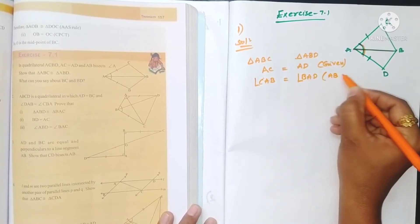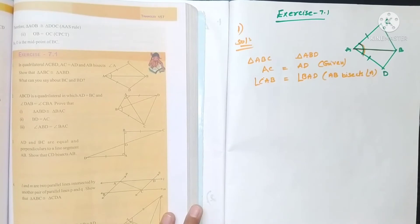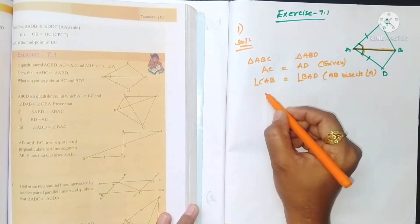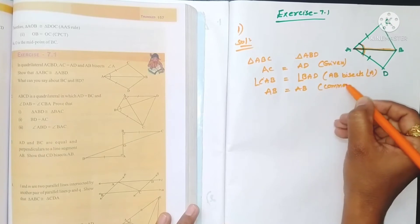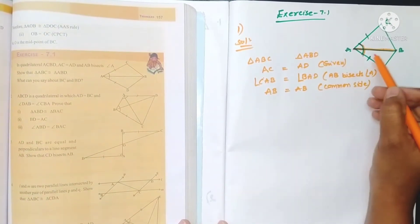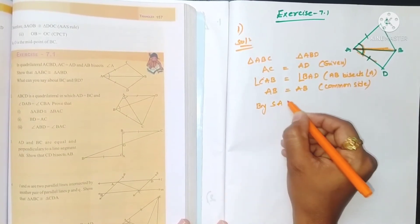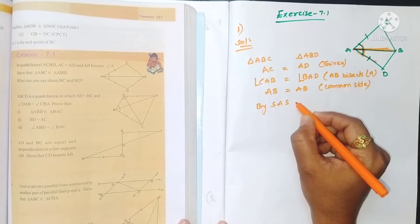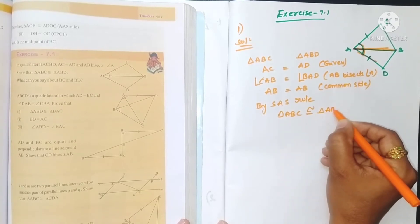The reason is AB bisects angle A. Now, AB is a side in both triangle ABC and triangle ABD, so AB is equal to AB — common side. Now we have two sides and the included angle equal. So by the Side-Angle-Side congruence criterion — SAS rule — triangle ABC is congruent to